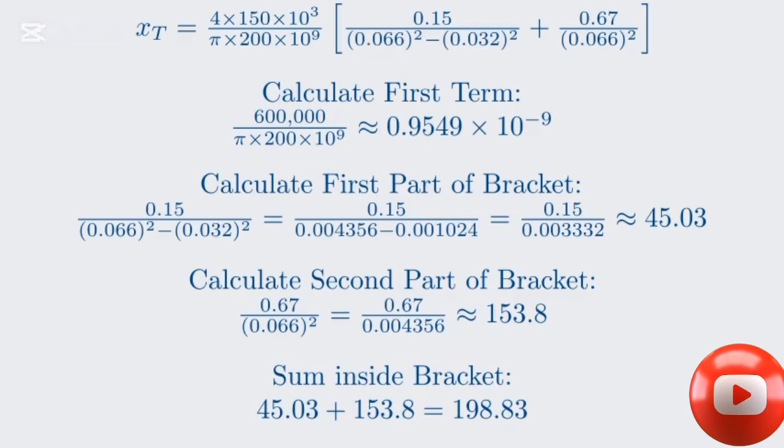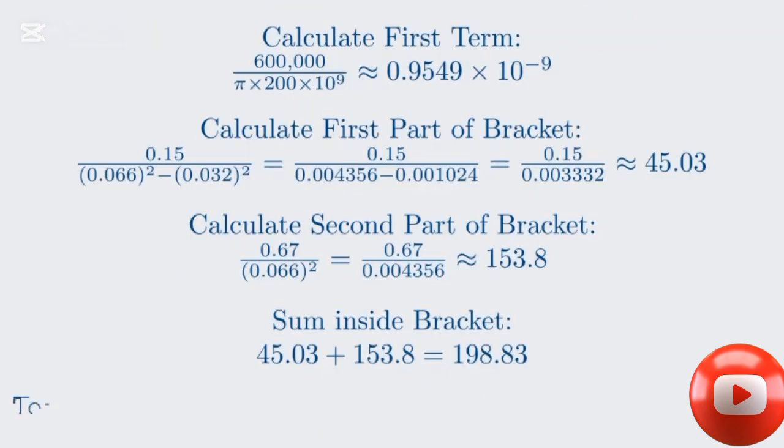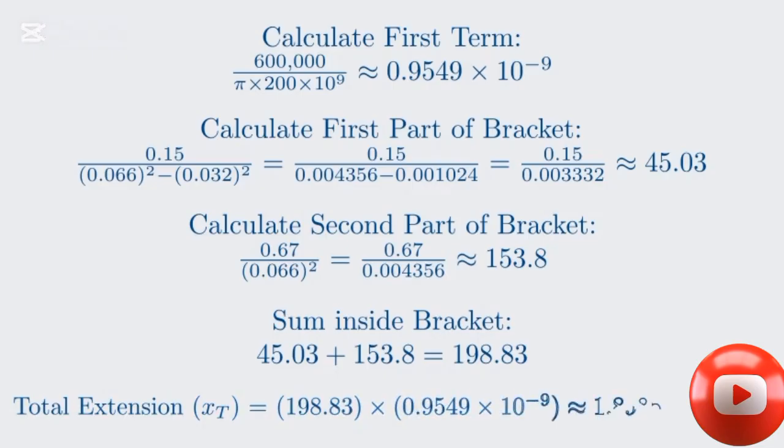Finally, we multiply our two results together. The total extension is the result from the bracket, 198.83, multiplied by the first term we calculated, 0.9549 times 10 to the negative ninth. This gives us approximately 1.8985 times 10 to the negative seventh meters.